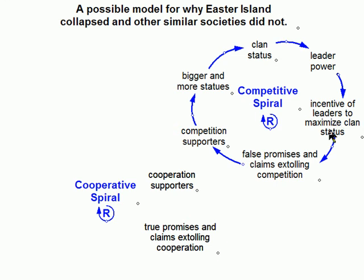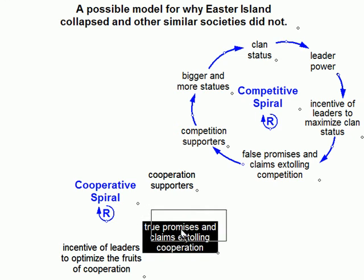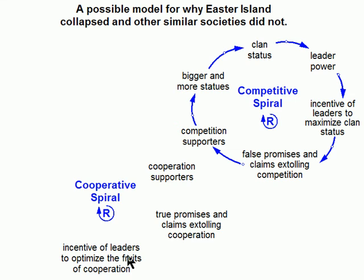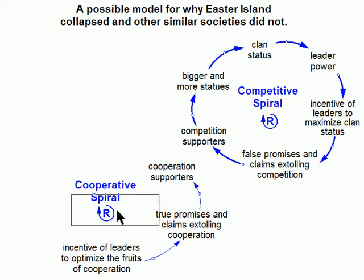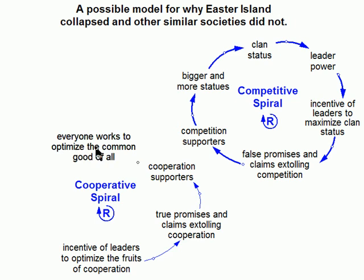We need a counterpart to maximizing clan status — we're going to optimize the fruits of cooperation. Now let's move things around a little and add our arrows. The rest of the cooperation loop differs radically from the competition loop, so we've got to think deeply here. By studying this incomplete loop, we can ask ourselves: what are those cooperation supporters going to be doing? Why, working for the common good of all, of course. So let's add this node and add the arrow.